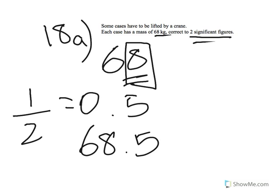And if you wanted to find the lower bound, you do 68 minus 0.5. But in this case, you want the upper bound, so you just add 0.5 and get 68.5 as the upper bound.